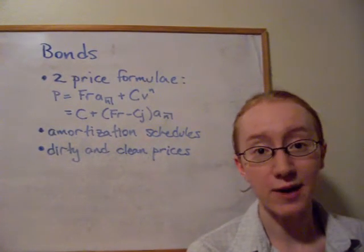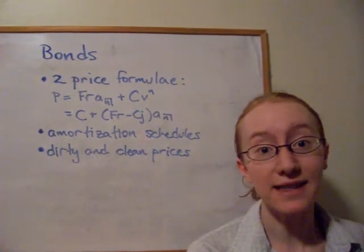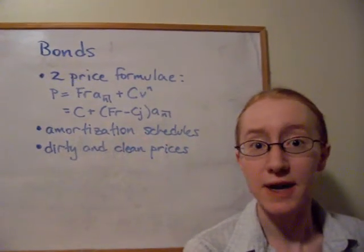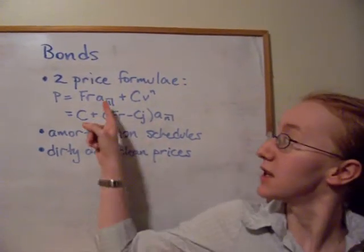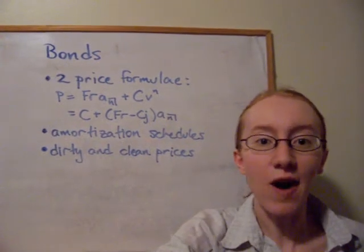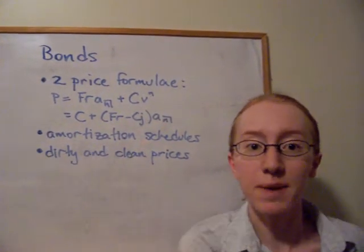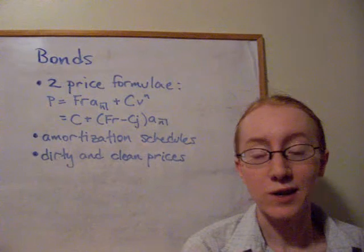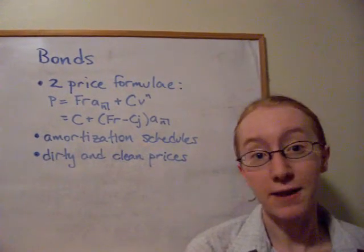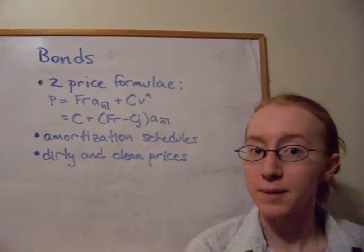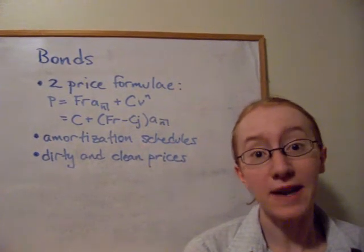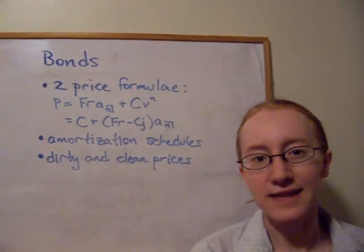There are two ways to calculate the actual price that the investor would be willing to pay for a bond. The first way is using first principles: we look at the present value at time zero of all payments the issuer will make. Each coupon amount is F, the face value, times R, the coupon rate per period, and there are N coupons, so we take the present value of the annuity where the amount is FR.